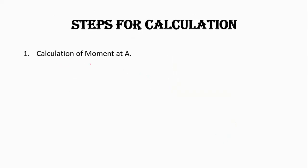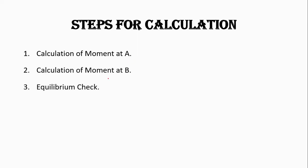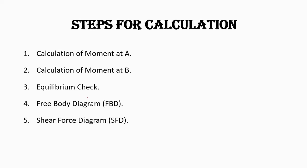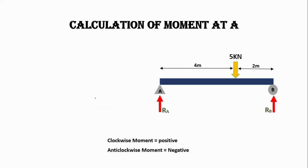First of all, we will calculate the moment at point A, then at point B, and then we will check for equilibrium. At the end, we will draw a free body diagram, shear force diagram, and bending moment diagram as well. Let's start with the calculation of moment at point A. These are the assumptions that we will consider.